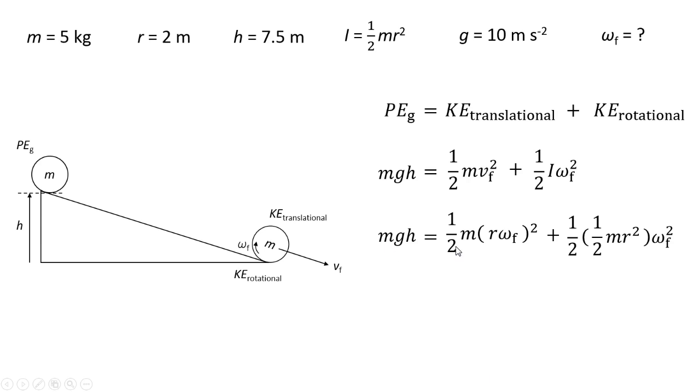But wait, there's a mass in every term, so we can cancel those masses. What else can we do? Well, first let's write the equation again. We've got gh equals 1/2 r²ω². I distributed the square, the exponent. And then I've got, well, half times half is a fourth of r²ω².